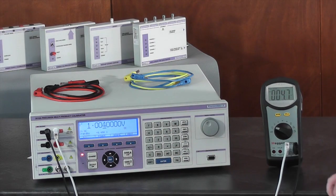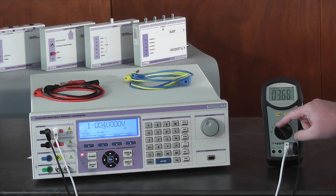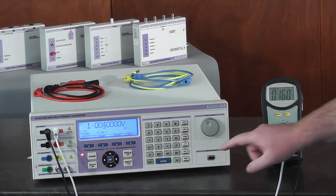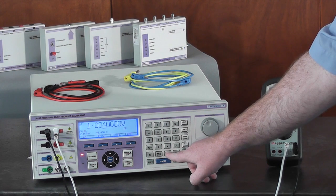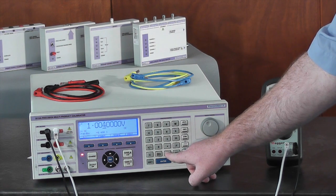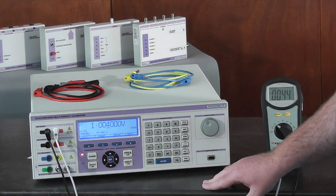After putting the calibrator into standby, we will switch the multimeter to the AC voltage output and then press the AC key on the 3000 series calibrator to move into AC voltage output.